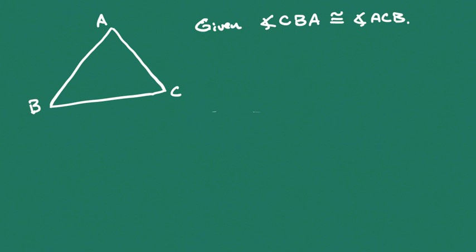Let's suppose that we have a triangle with points A, B, and C. Furthermore, what we're told at the beginning is that two of the angles are going to be congruent. So we assume that angle CBA is going to be congruent to angle ACB — we have this angle congruent to this angle as part of our given assumption.